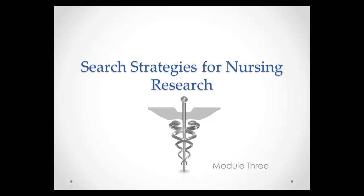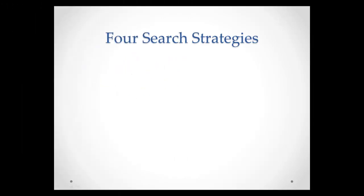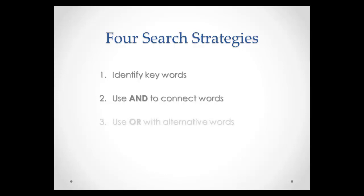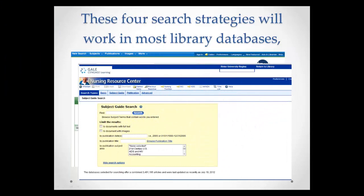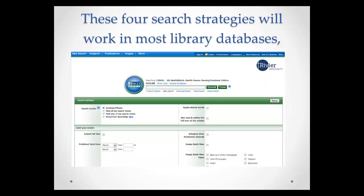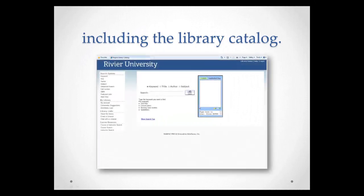This module will introduce you to four search strategies to use with library databases. The four search strategies are: identify keywords, use AND to connect words, use OR with alternative words, and use the asterisk to truncate words. These four search strategies will work in most library databases, including the library catalog.